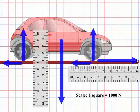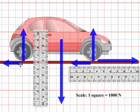So, 6,000 newtons for this vector to the right. This vector: 4,500 newtons up. This vector: 3,000 newtons to the left. This vector: 9,000 newtons down. This vector: 4,500 newtons up. This vector: 3,500 newtons to the left.